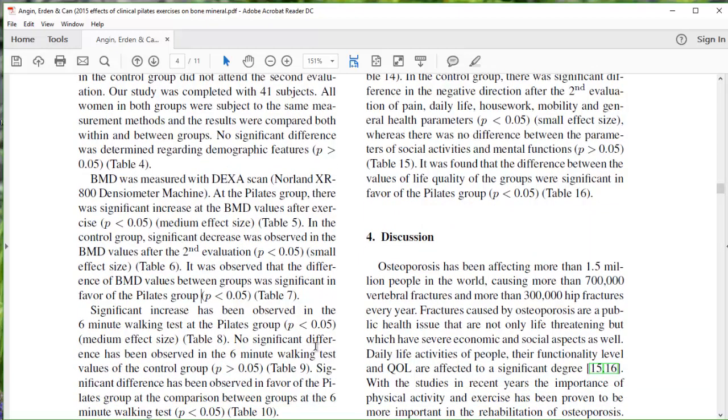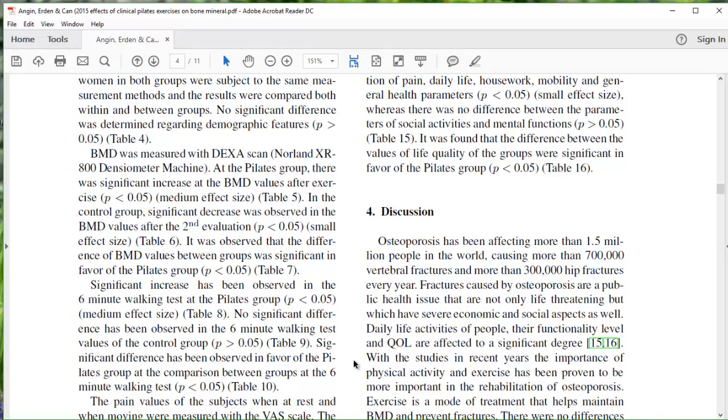The six-minute walk test is kind of interesting because there are a lot of functional fitness tests, and that's really what part of this is for older adults, and their subject group was kind of young. But a six-minute walk test gives a little bit of insight into potential cardiorespiratory fitness improvements. And so they write 'significant difference has been observed in favor of the Pilates group at the comparison between the groups at the six-minute walking test.' But what's kind of strange is in the previous sentence they say no significant difference was observed for the control group. So I think what we can conclude is that the Pilates group got better. The control group did not. That's no surprise. And it's a little unclear from the writing here whether it was significant comparing one group to another. So we will need to eventually look at table 10 and try to discern that on our own.